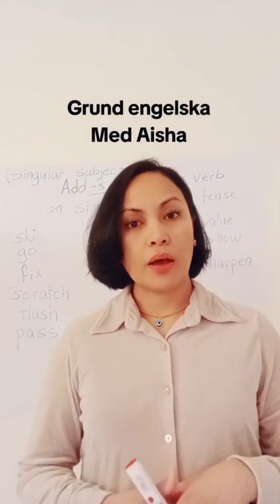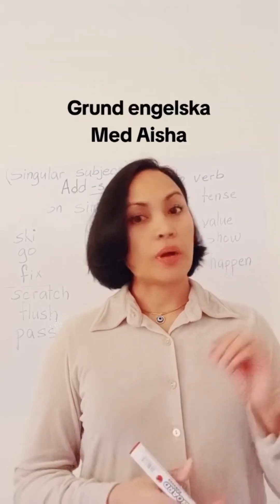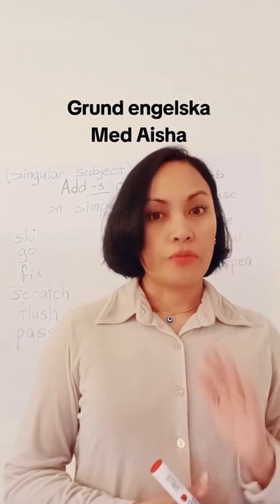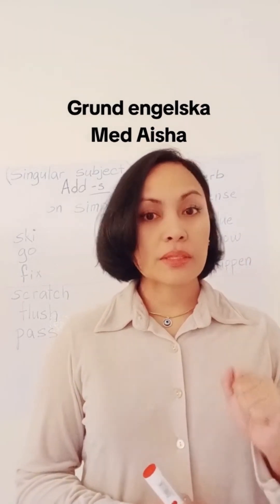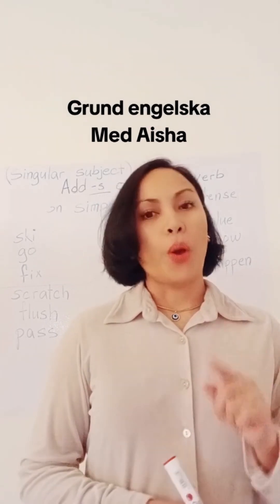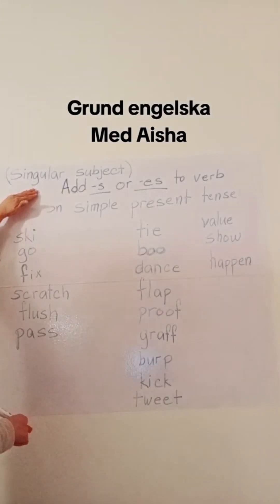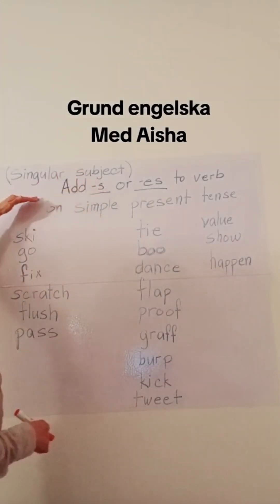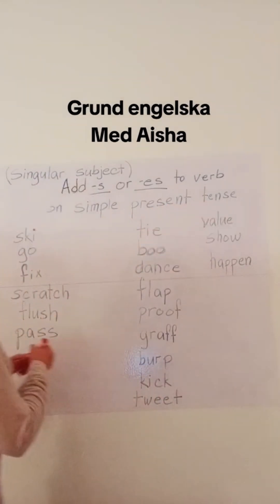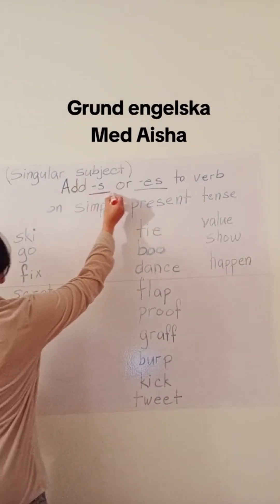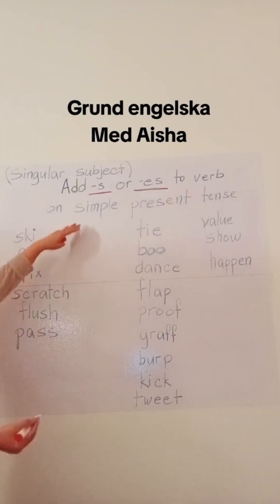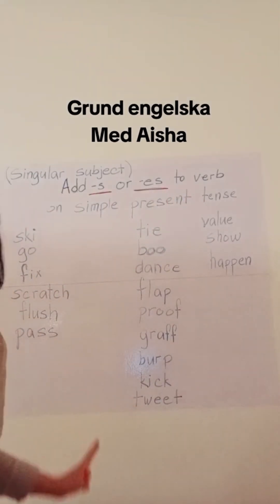Here are some of the rules on how to add s or es to your verb in using simple present tense. If you have a singular subject and a simple present tense, we have to add s or es to the verb. So here are the lists.